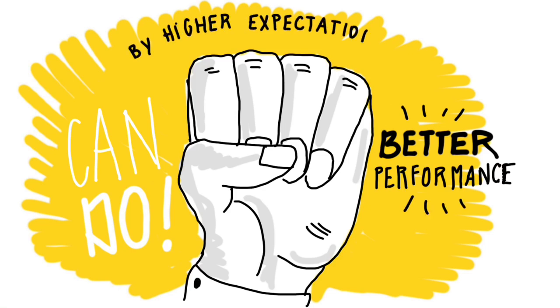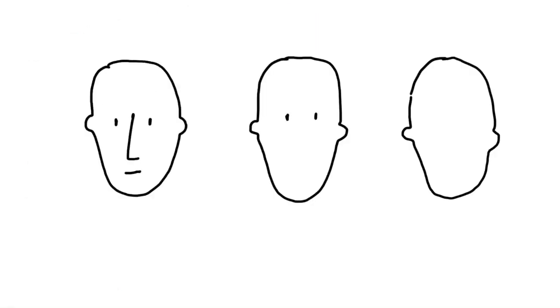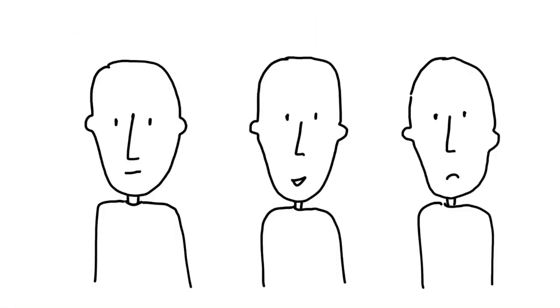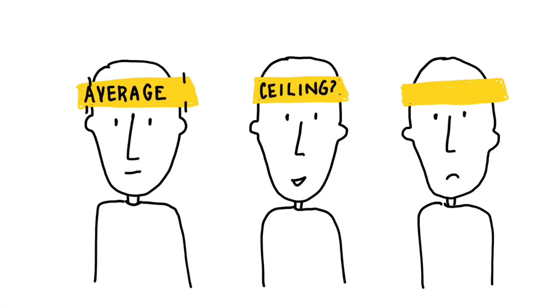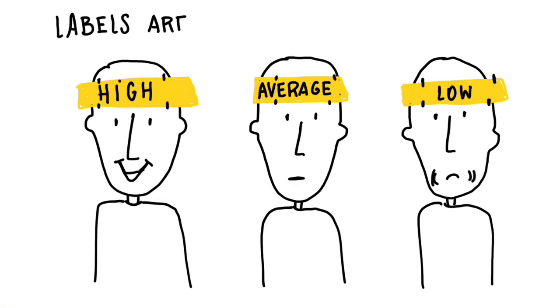So the Pygmalion effect teaches us that we have to be careful in what we believe. Most of us have the habit of labeling team members. Maria is a high performer, Joe is average, Eva reached her ceiling, and Mike is a low performer. But our labels are self-fulfilling prophecies.